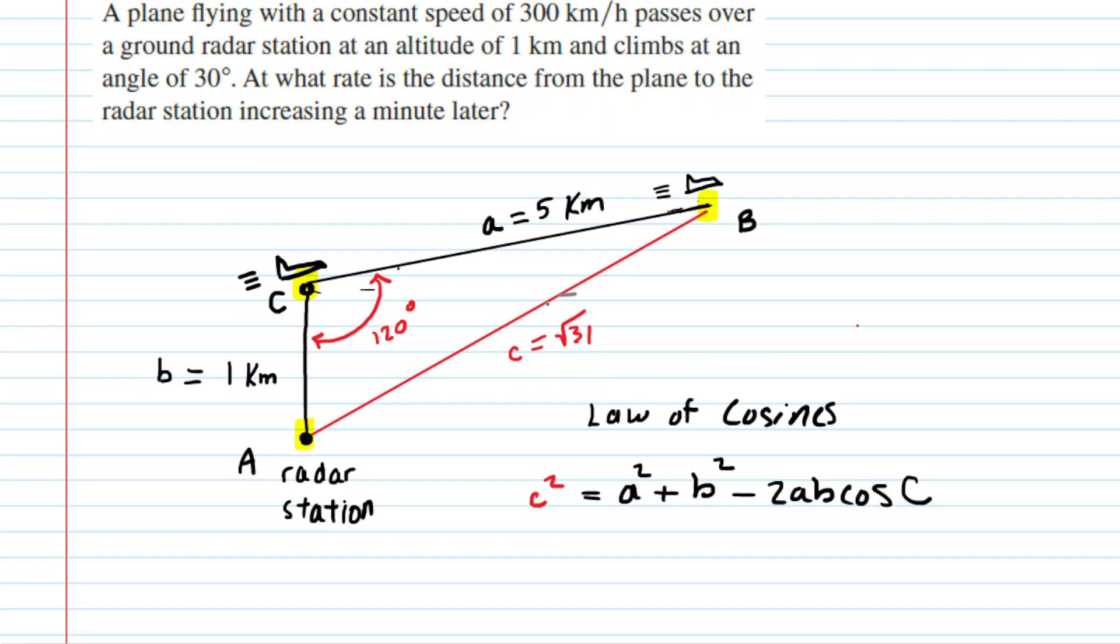The next thing we want to decipher is what quantities are changing within our law of cosines equation, as well as what quantities are remaining constant. To get a feel for what is constant, we might imagine that the airplane continues its journey outward. If we were to stretch the side that's marked little a a little bit further, the plane might end up about here, and then the distance to the radar station would be much longer. It would be this distance right here. So hopefully you can see that little a is changing and little c is also changing.